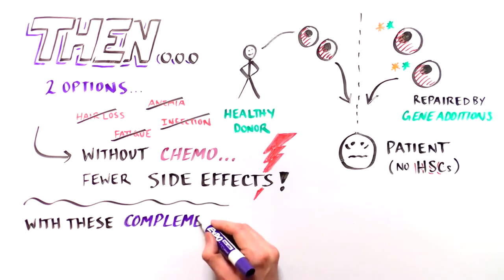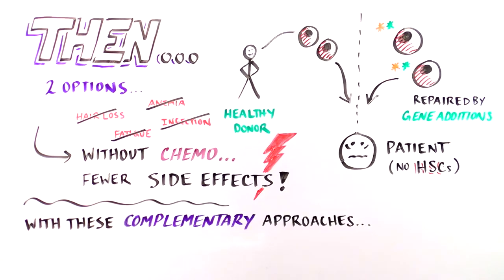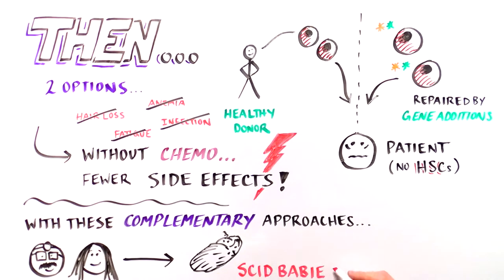By using these two complementary approaches, correcting the mutated gene in a patient's own stem cells and replacing their mutated HSCs with healthy ones, scientists and physicians are helping SCID babies build strong, functioning immune systems and live long, healthy lives.